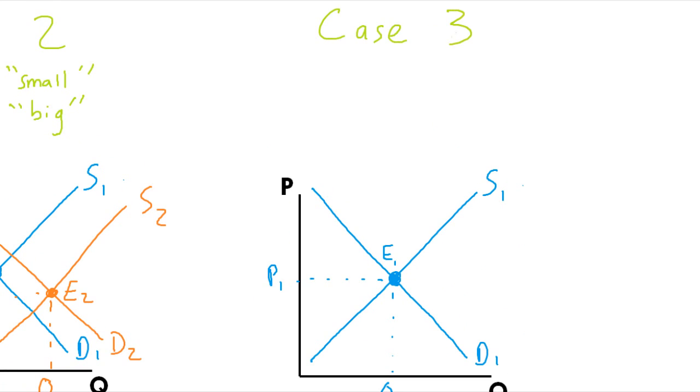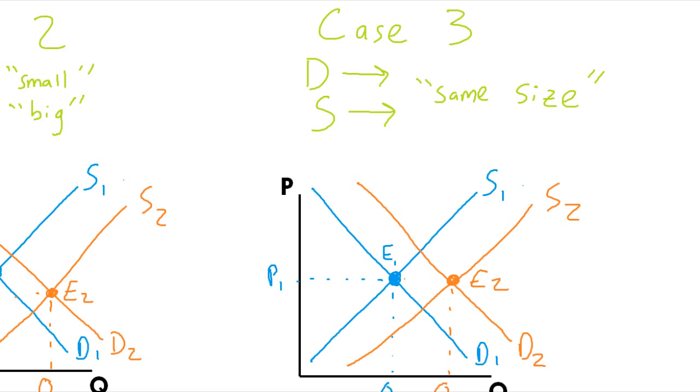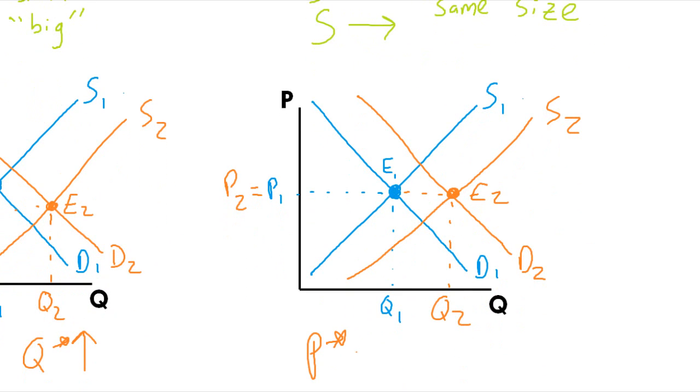So on the third graph, you can probably guess what you're about to see. For lack of a better way to describe it, I'm going to say that the supply and demand shifts are going to be the same size. Or, more accurately, I'm going to draw the shifts such that the price effects cancel each other out. So when we draw the graph, you'll see that Q star increased but P star remained the same, which I have shown on the graph with the notation P2 equals P1.